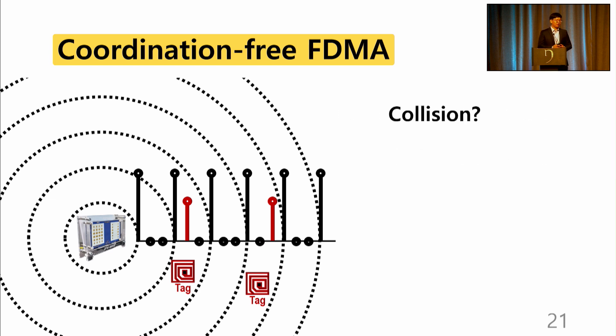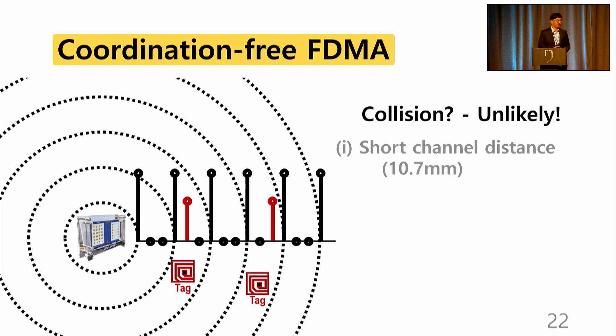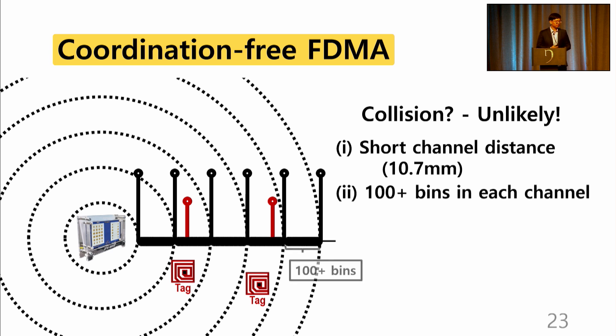Now, some may be wondering what happens when multiple tags are assigned to the same channel. Collision within a channel is highly unlikely. This is because, first, the short channel distance of 10.7 mm. So there is very little chance that multiple tags are assigned to the same channel. Second, the large number of frequency bins at each channel support channel sharing. For example, our practical evaluation settings hold over 100 tags per channel.